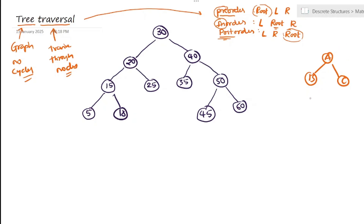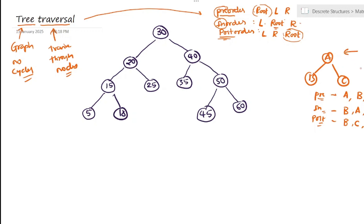Now, if you consider this tree A, B, C and try to write pre-order, in-order and post-order, you can write it easily. For pre-order, root will come first: A, B, C. In in-order, we will have left first, then root, then right — so it is going to be B, A, and C. And for post-order, we are going to have first left, that is B, then right, that is C, and then root, that is A. This is pre-order, in-order and post-order of this simple binary tree.